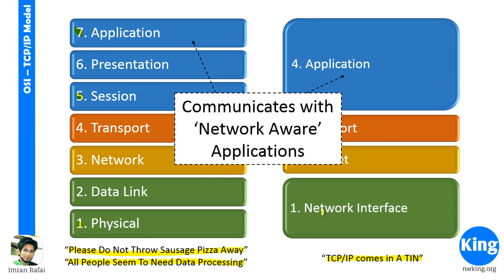I have color-coded the top three layers in blue because, as a Cisco network engineer, there is very little we need to deal with layers 5, 6, and 7. Most Cisco devices will not look beyond layer 4. Layers 1, 2, 3, and 4 are very critical for a Cisco engineer, while layers 5, 6, and 7 are taken care of by the operating system. You just need a rough idea of what they do.